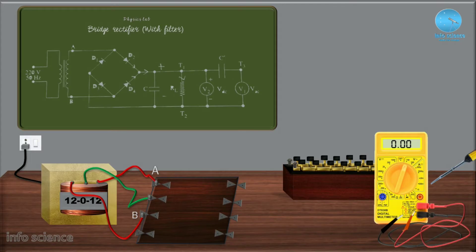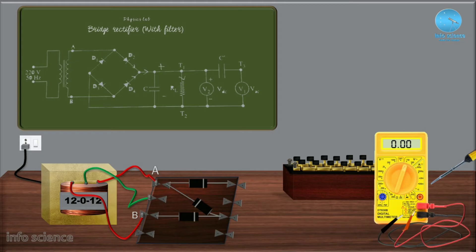Now we can connect the diodes. We connect D1 diode, then D2 diode, then D3 diode. Now we have three diodes, then we connect D4 diode. Now we have all four diodes and the rectifier construction is complete. Now we have the load or filter circuit.